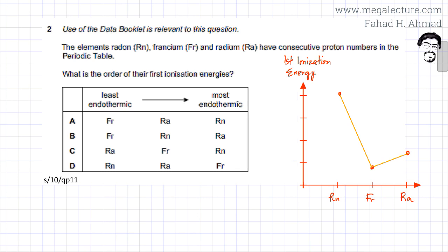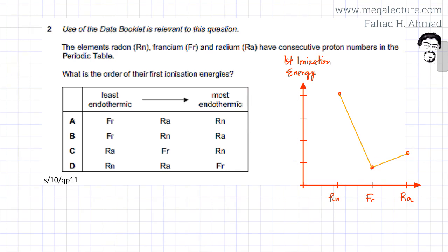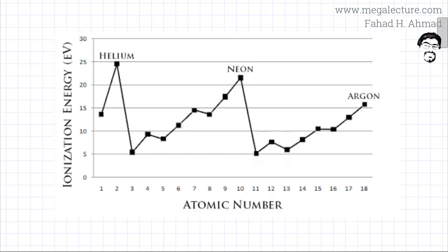To answer this question, we need to figure out which one is most endothermic and which is least endothermic. The most endothermic is radon (Rn), and the least endothermic is francium. According to this, the correct option for this question is going to be option A.